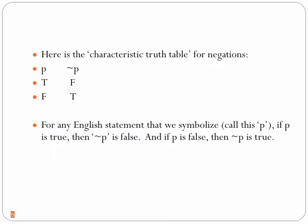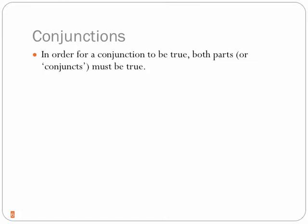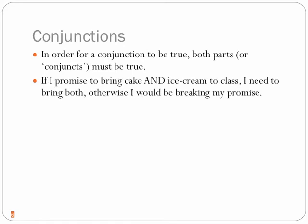Let's talk about conjunctions. In order for a conjunction to be true, both parts — called conjuncts — have to be true. For example, if I promise to bring cake and ice cream to class, the only way to keep my promise is if I bring both. If I only bring the ice cream, or only the cake, or neither, then I'm breaking my promise. The only way for my promise to be true is if both parts of the AND statement turn out to be true.